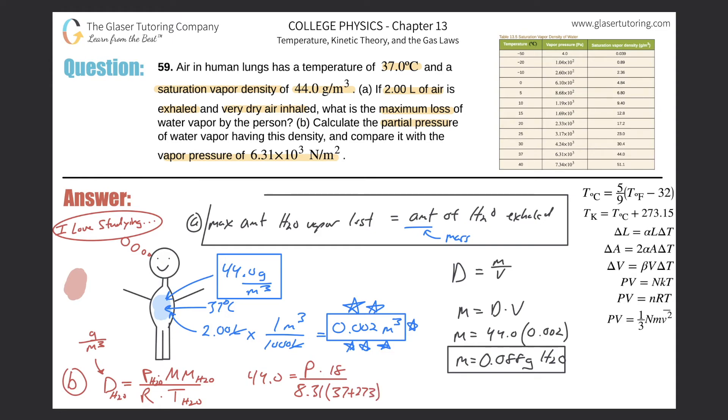Now I need to solve this for P. Do a cross multiplication and divide out the 18. Let's do it: 44 times 8.31 times parenthesis 37 plus 273, all divided by 18. The pressure will be about 6.30 times 10 to the third pascals.